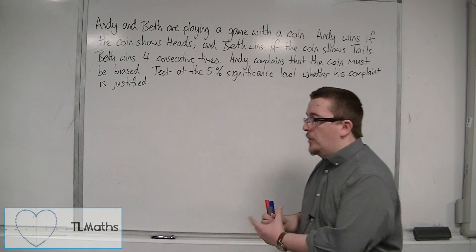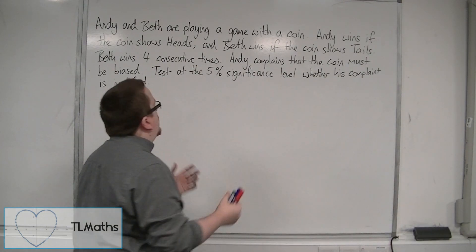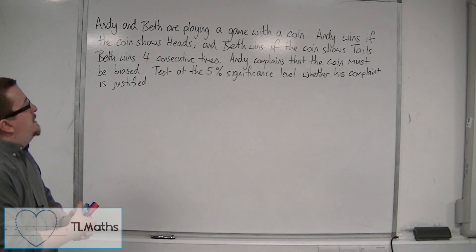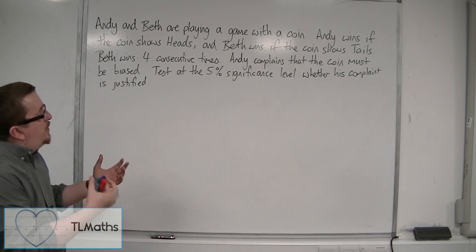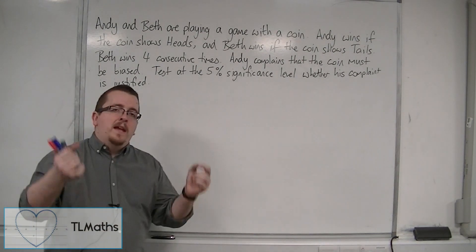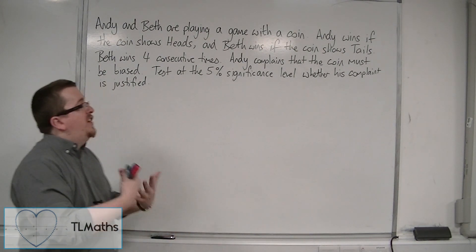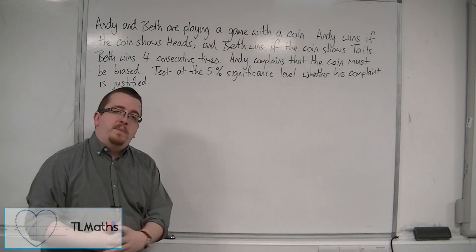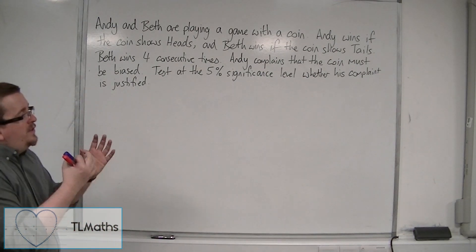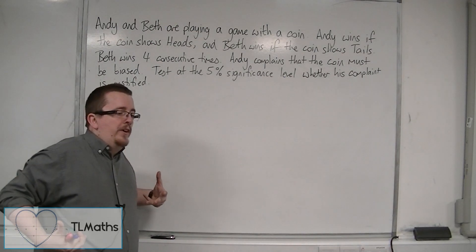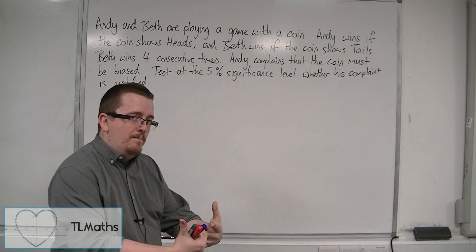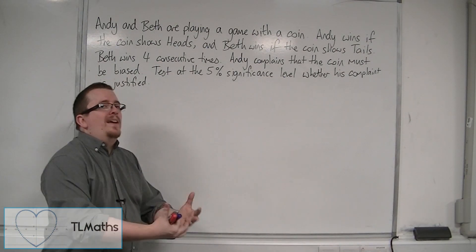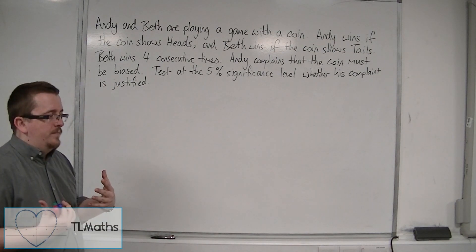So we've got this simple game that's being played. And because the coin has been flipped four times and four tails have come up, Andy thinks that the coin must be biased. So we're going to determine whether we have evidence to support that claim or evidence against that claim.